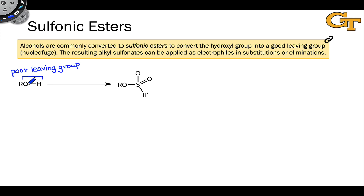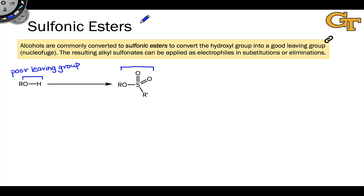If we'd like to substitute the OH group for something else, we'd like to turn this OH group into a good leaving group. The most common way that's done is through the creation of what's called a sulfonic ester, or sulfonate ester.